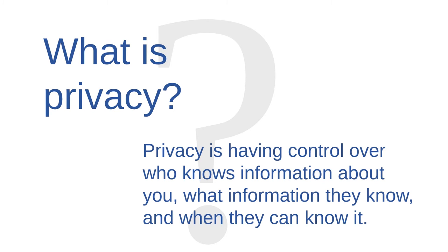There are a lot of different ways that you could define privacy. What is privacy? One helpful definition might look like this: Privacy is having control over who knows information about you, what information they know, and when they can know it. If you have a good deal of control over who knows what about you and when they know it, then most people would probably agree that you enjoy a high degree of privacy.